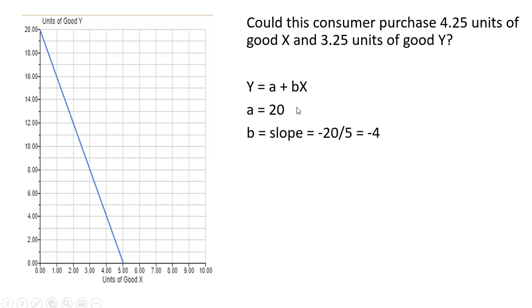In this case, a is 20, the vertical intercept. b is the slope, 20 divided by 5, rise over run, downward sloping, so minus 4.